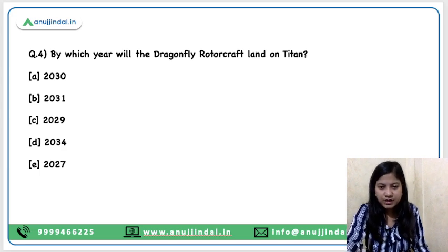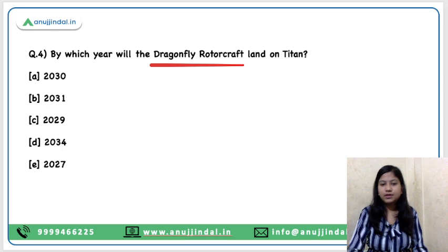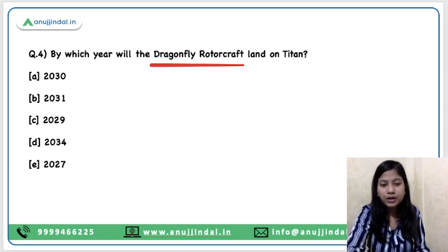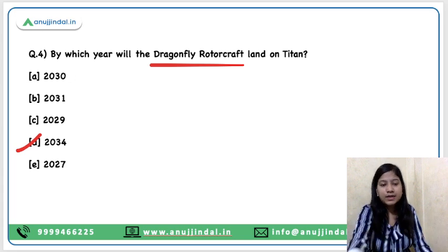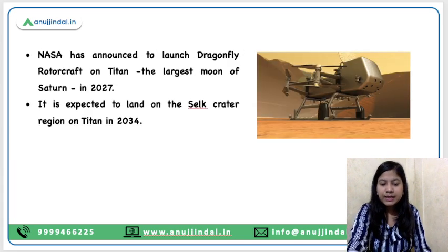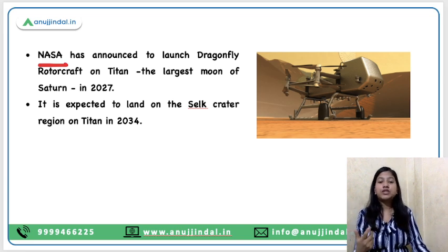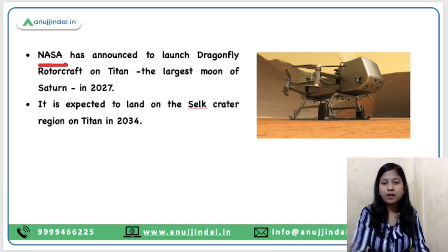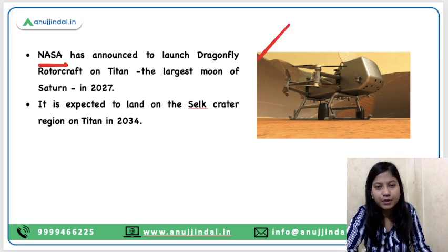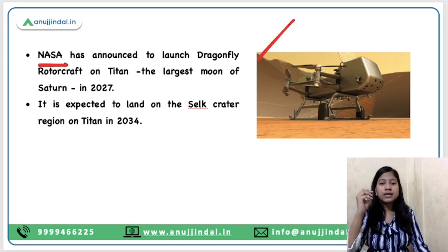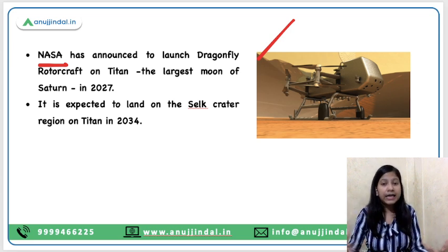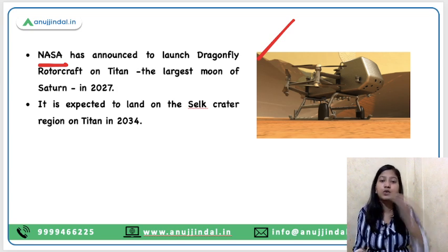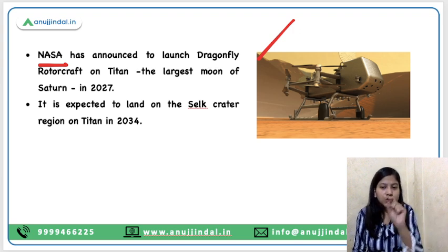Question number 4: By which year will the Dragonfly Rotorcraft land on Titan? The answer is 2034. NASA has announced to launch its Dragonfly Rotorcraft. A rotorcraft is basically like a helicopter, and this helicopter is also capable of functioning like a drone — it can surveil the area and undertake research work, collecting samples which can be used for research on Earth.